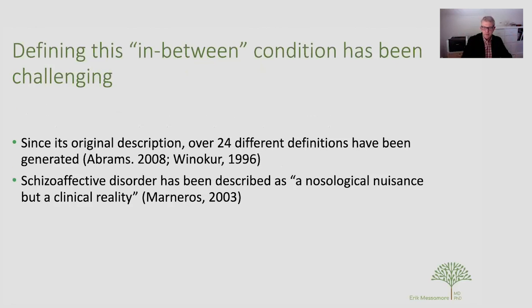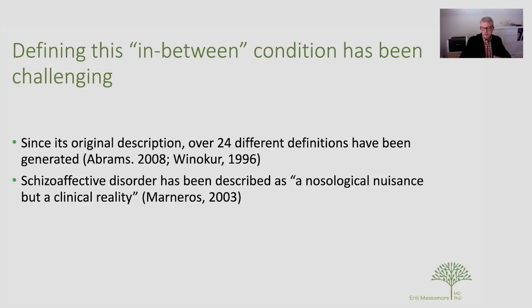Kasanin called for more inclusive thinking around the nature of psychotic illnesses, which is a good point any clinician understands. But it has been extraordinarily difficult to operationalize what 'in between' actually means. Winokur did an analysis of the literature and found 24 different definitions for schizoaffective disorder since the Kasanin paper. A great phrase from Marneros and colleagues calls it 'a nosological nuisance but a clinical reality.' We know for sure there are people who don't neatly fit non-affective or affective psychosis — there's a blend — but where, and whether, you draw the line to make a category has been a thorn in the side.